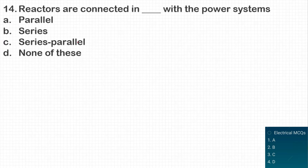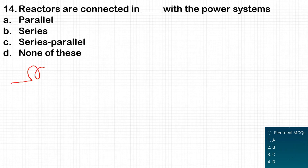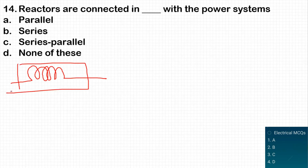From the previously discussed questions, you can easily answer this one: reactors are connected in series with the power system lines. So option B is the correct answer.